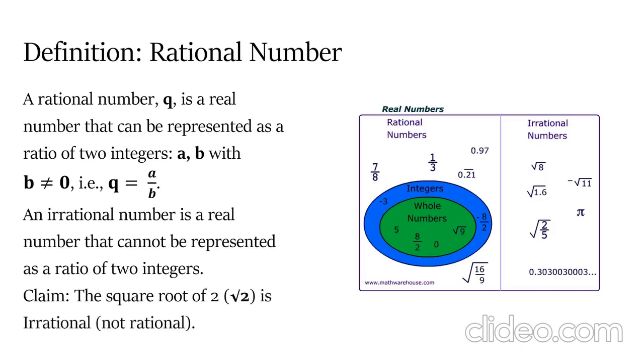Now, we claim that the square root of 2 is indeed irrational. To show this, we are going to utilize two lemmas.